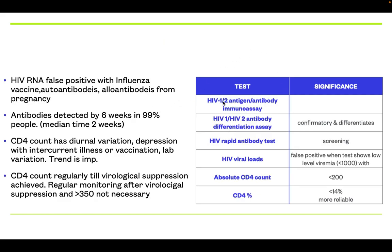Now, some information about all the tests. The first is HIV-1/2 antigen-antibody immunoassay — the fourth generation assay using P24 antigen. This is the first test used in the CDC guidelines. The other is HIV-1/2 antibody differentiation assay, which differentiates HIV-1 from HIV-2 and is a confirmatory test. The HIV rapid antibody test is used for screening and gives results in 10 to 20 minutes. HIV viral load can be false positive in certain conditions.